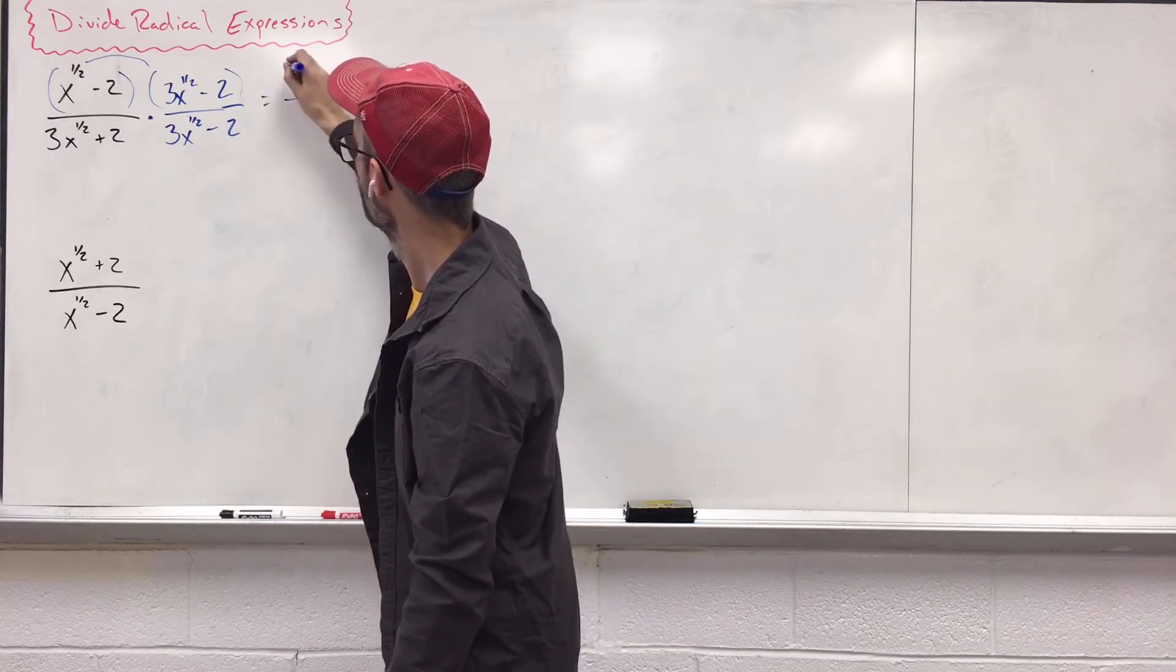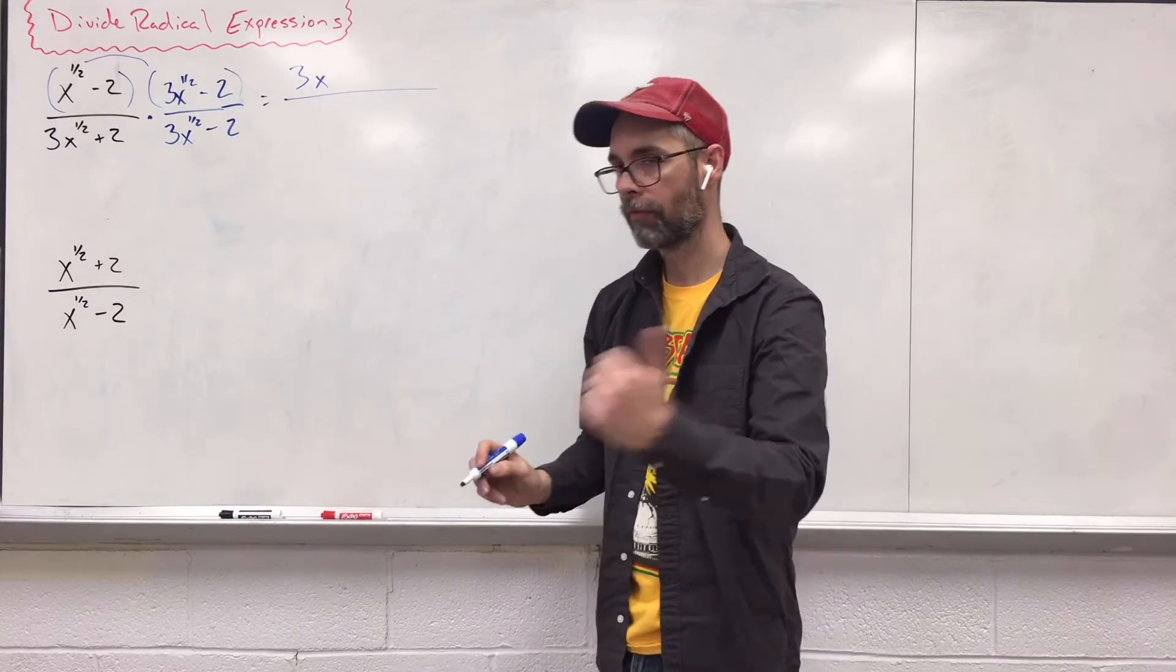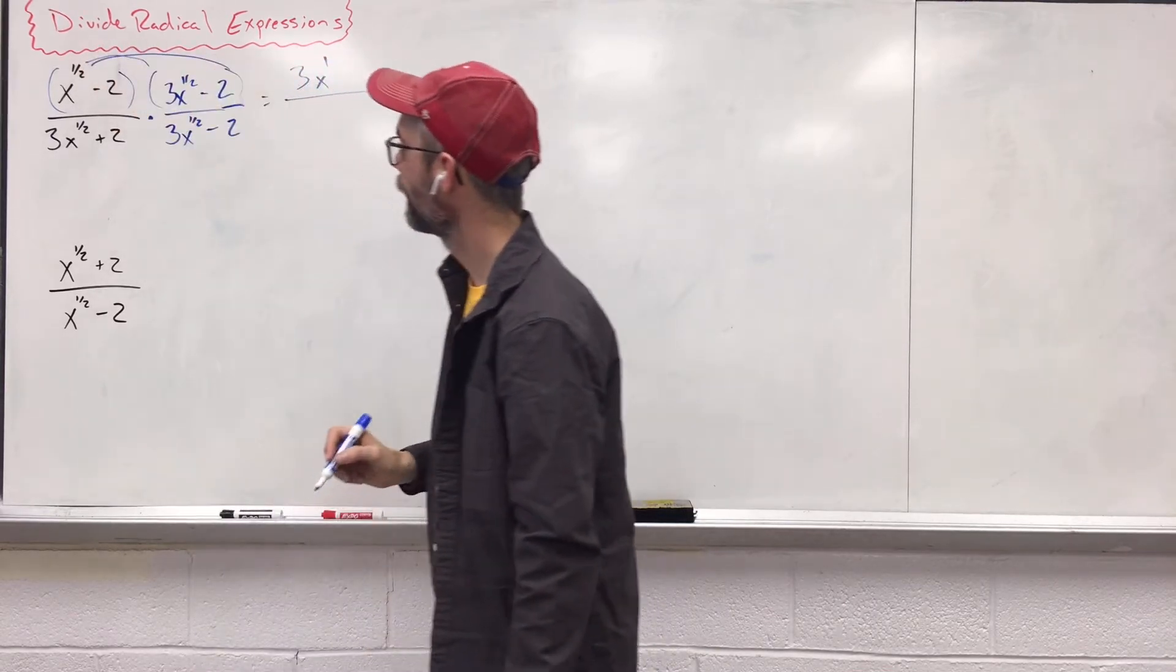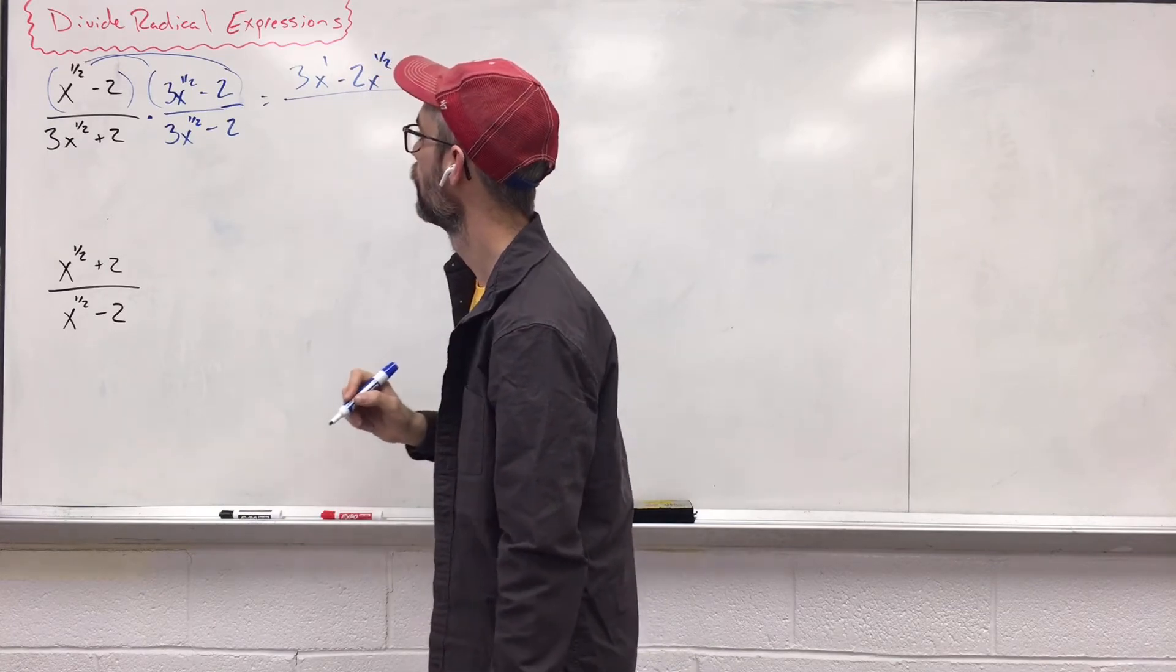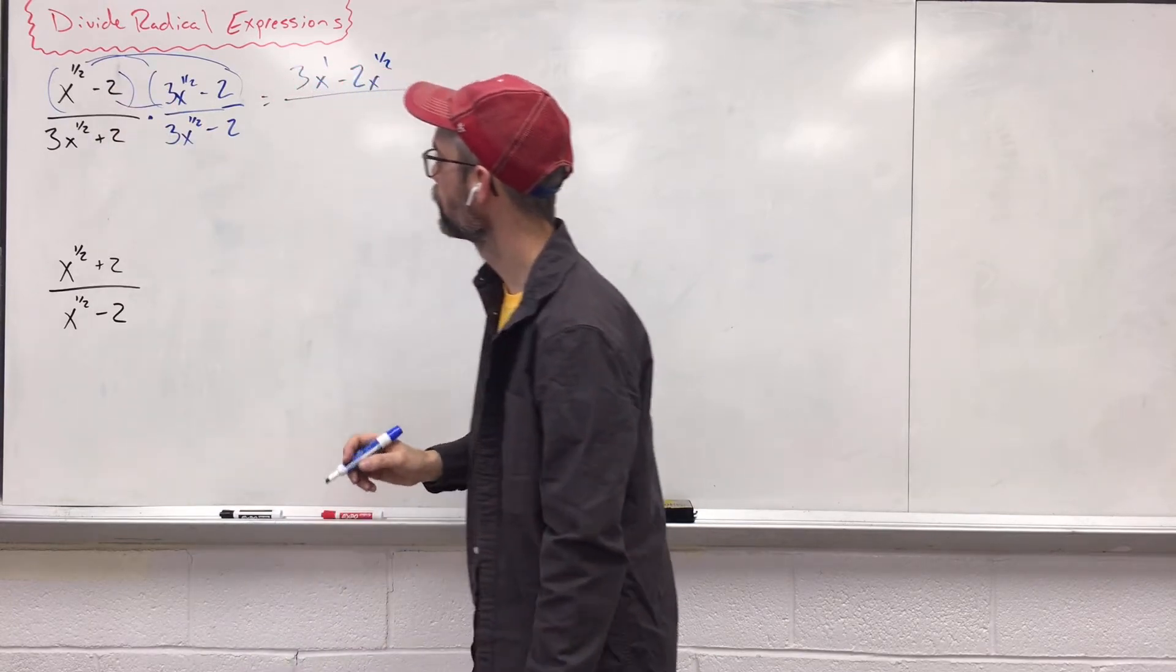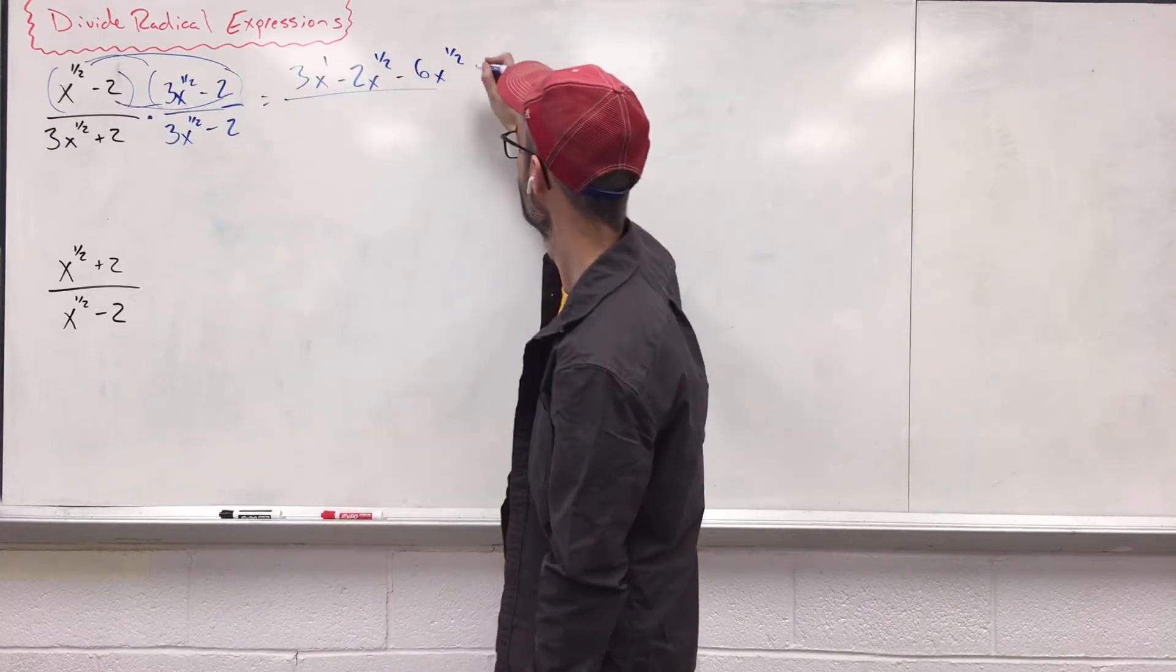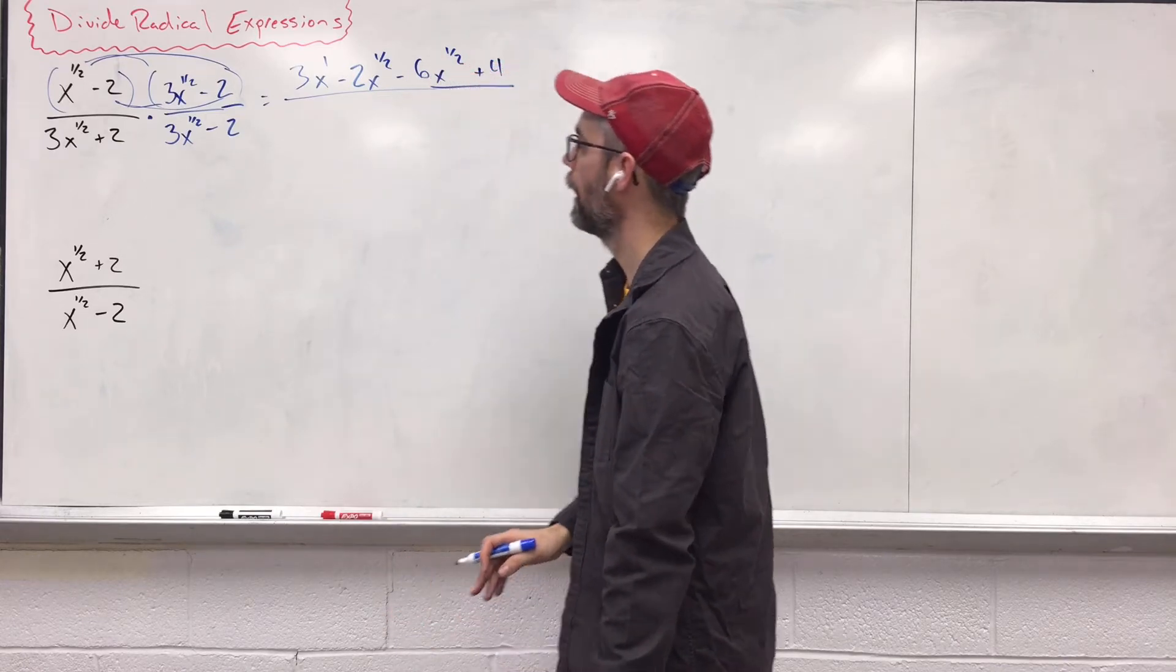We're going to get 3x to the, remember, we have to add the exponents. One-half plus one-half is going to give us 1. Distribute out there, giving us negative 2x to the one-half. Then we have to start from the inside, distribute those guys, get negative 6x to the one-half. And then, finally, negative negative gives us positive. We'll get a 4. We'll come back and we'll simplify all that in a second.